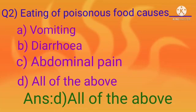Answer is D — All of the above. Eating poisonous food causes vomiting, diarrhea, and abdominal pain, and sometimes leads to death also.